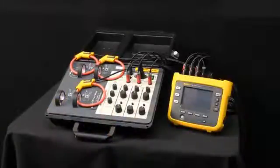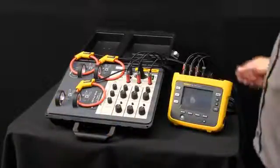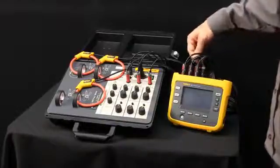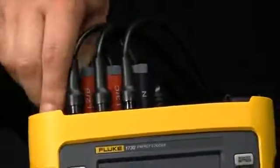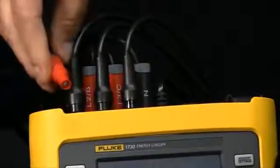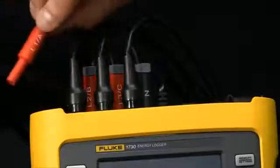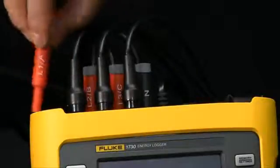Performing a load study with the Fluke 1730 Energy Logger requires connections. Here we've got connections for our voltage. With our voltage connectors we've got a typical 4mm jack. Also has identification on there for which phase it may be on if it's more than one phase.